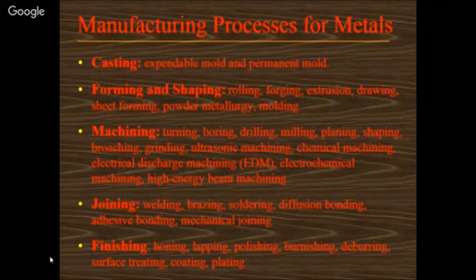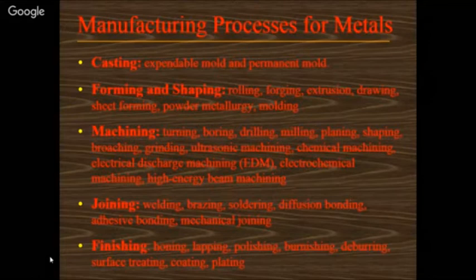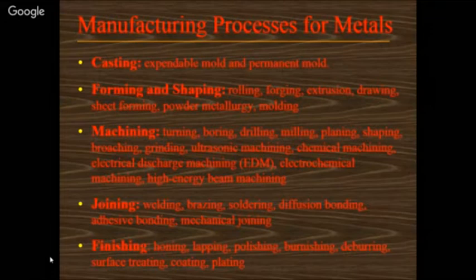In casting, normally there is sand mold and permanent mold. Forming and shaping includes various processes like rolling, forging, extrusion, drawing, sheet metal forming, powder metallurgy, extrusion, molding — all this comes under forming and shaping.